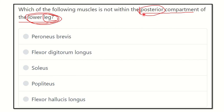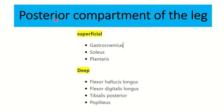To answer this, we first need to identify which muscles lie in the posterior compartment of the lower leg. The lower leg has four compartments: the superficial posterior compartment, the deep posterior compartment, the anterior compartment, and the lateral compartment. This is very important for the MRCS exam.